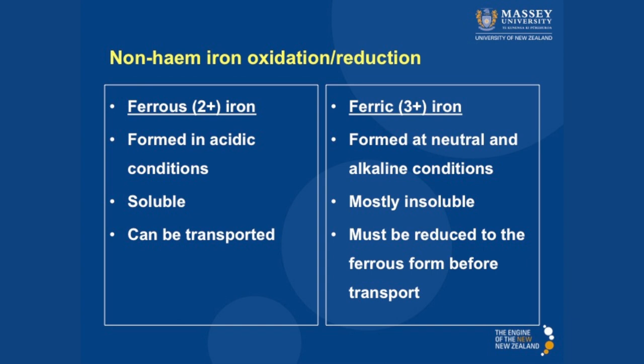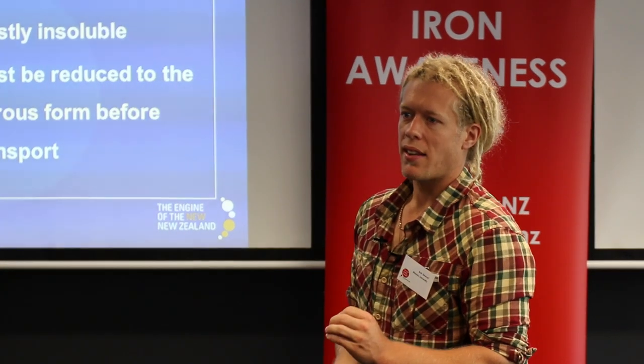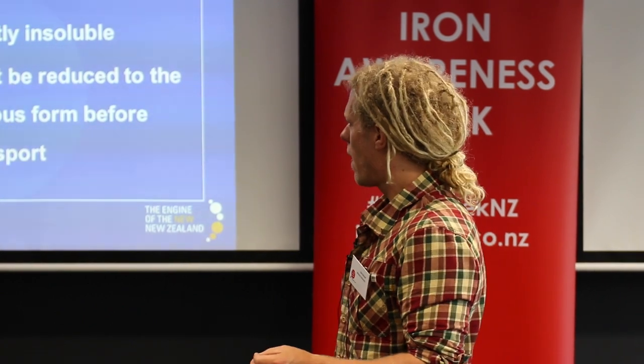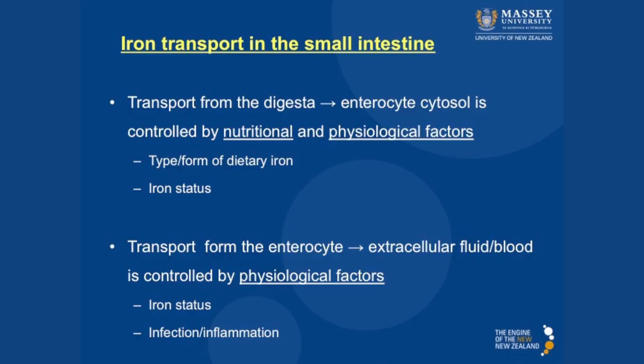A little summary: ferrous iron is formed under acidic conditions, it's soluble and can be transported, but it's only really present in the stomach. Ferric iron is formed under neutral conditions like the small intestine, is mostly insoluble, and must be reduced back to the ferrous form before it can be transported.